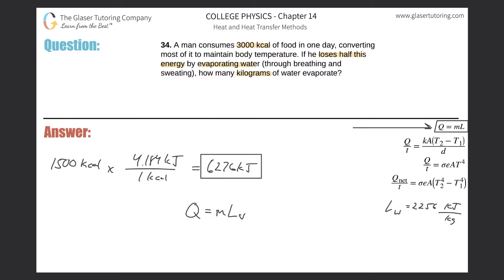The mass will come out in kilograms, as you can see from the unit in the latent heat value. So it's just 6,276 equals the mass multiplied by 2,256. Dividing out 2,256 gives us a value of about 2.78 kilograms.